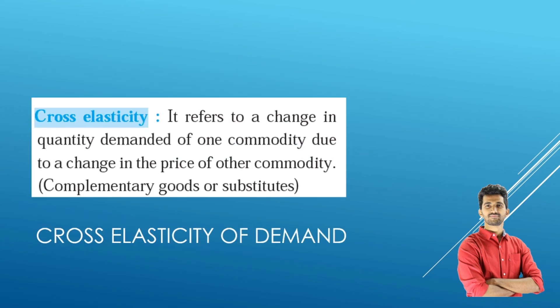The third type is cross elasticity of demand. This is regarding complementary goods or substitute goods — goods which are complementing each other or are relatively substitutes for each other. It refers to a change in quantity demanded of one commodity due to a change in the price of another commodity. If the price of a certain commodity changes, it might lead to a change in demand for the other product — such an instance leads to cross elasticity of demand.